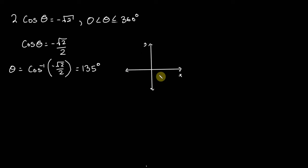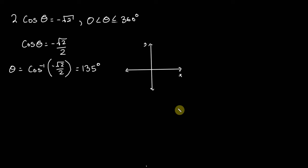Likewise, for sine it's positive above the x-axis and negative below. For tan, it's positive in the first quadrant and positive in the third quadrant. So in this case, cos is negative — it's set to negative root 2 — so we can logically deduce that our first solution is going to be right here at 135 degrees.